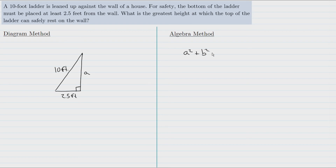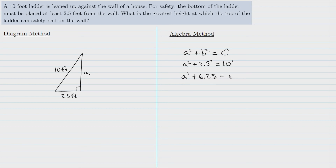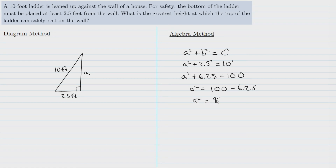For the algebraic approach, the Pythagorean theorem states a squared plus b squared equals c squared. The hypotenuse is 10 and the other two legs are a and 2.5, so we write: a squared plus 2.5 squared equals 10 squared. 2.5 squared is 6.25 and 10 squared is 100. To solve for a, we subtract 6.25 from both sides, giving us a squared equals 100 minus 6.25.